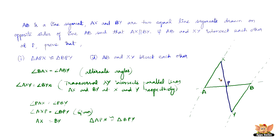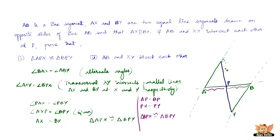Since we proved that the two triangles are congruent, we can say that AP equals BP and PX equals PY, because they are corresponding parts of congruent triangles. Hence triangle APX is congruent to triangle BPY, and AB and XY bisect each other. The key trick in these problems is to always prove that two triangles are congruent using one of the available criteria, and once you do, you can prove everything else.